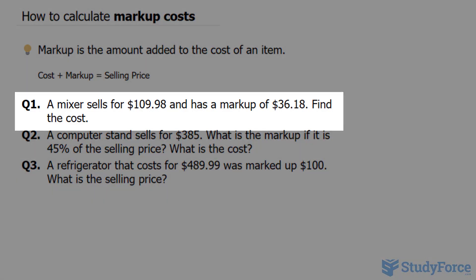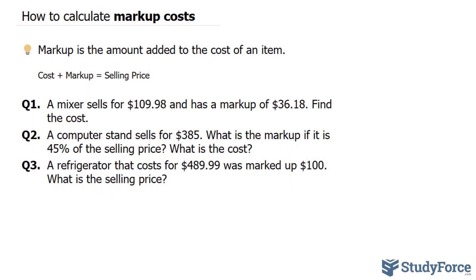The first question reads: a mixer sells for $109.98 and has a markup of $36.18. We want to find the cost. In other words, they're asking how much was this item before the markup was added?